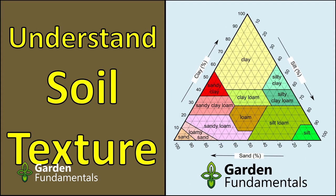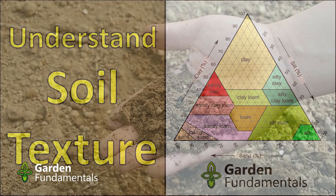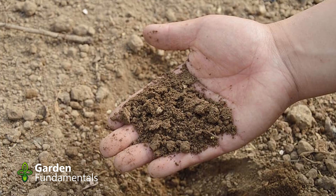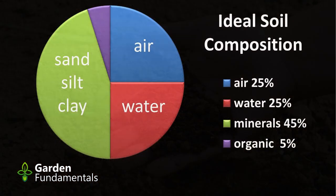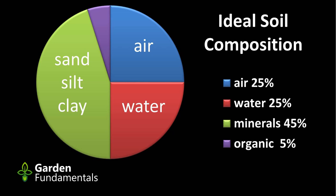If you go to my channel Garden Fundamentals, there's a complete video showing exactly how to do this test and all the calculations. Now let's say we have the ideal soil — the right amount of sand, silt, and clay, all mixed together. Is that good soil? Well, it isn't really, because we forgot one really important part: remember this soil also needs 5% organic matter, and that 5% is critical for making good soil.